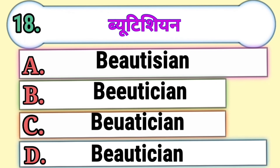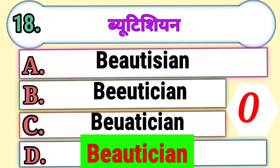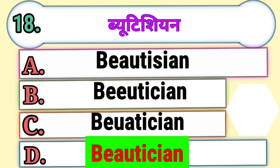Question 18. Beautician. Choose the correct spelling of beautician. Option A, Option B, Option C, or Option D. The correct answer is Option D, Beautician.